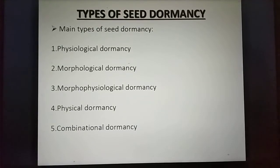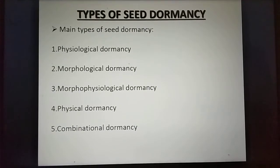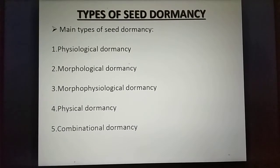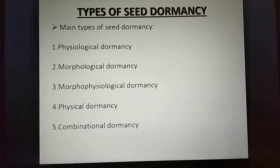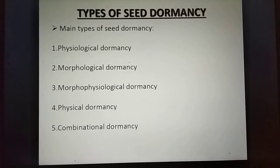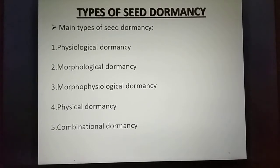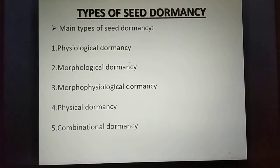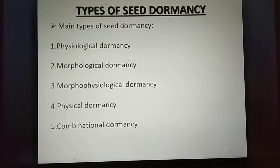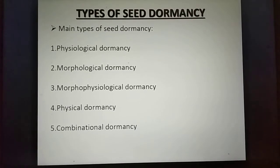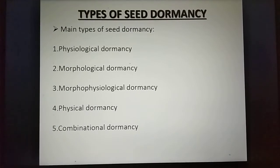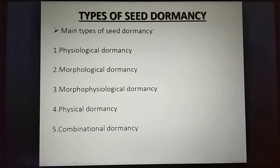There are five main types of seed dormancy: number one, physiological dormancy; number two, morphological dormancy; number three, morphophysiological dormancy; number four, physical dormancy; and number five, combinational dormancy. Let us discuss these one by one.